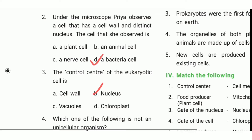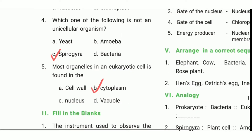Third question: the control center of the eukaryotic cell is dash. The answer is B, nucleus. Fourth question: which one of the following is not a unicellular organism? The answer is C, Spirogyra.